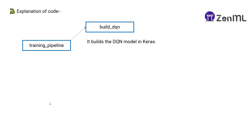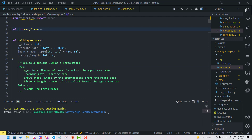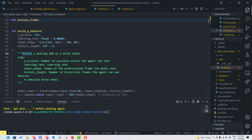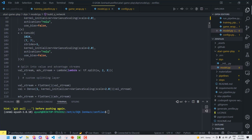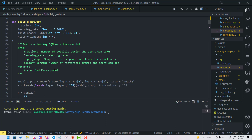The next step is build DQN. Build DQN builds the DQN model in Keras. Another step is replay buffer — the replay buffer is a class that holds all the experiences of the agent that the agent has seen so far, and on demand gives you stored experiences. Build DQN specifically builds a dueling DQN as a Keras model with several convolutional layers and Q values at the end. For detailed understanding, I recommend having a good understanding of DQN networks.